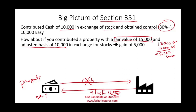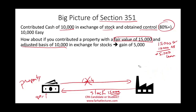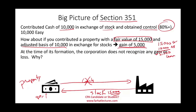This doesn't have to be one person. When the transaction happens, you could have one, two, three, or four individuals — as long as together they obtain 80% control, they are considered one entity and taxes on the gain don't apply. So at the time of formation of a corporation — whether S or C — neither the corporation nor the shareholder recognizes any gain or loss, as long as certain conditions are met.